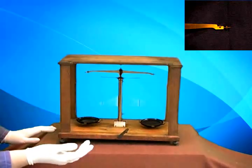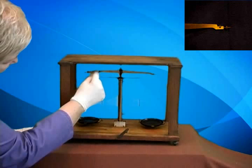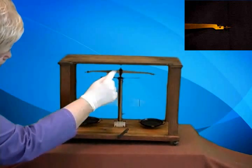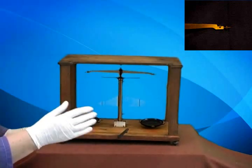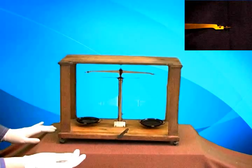Balances developed in the later 1900s had a platinum rider that moved along the beam to give an even greater degree of accuracy and a greater degree of sensitivity.